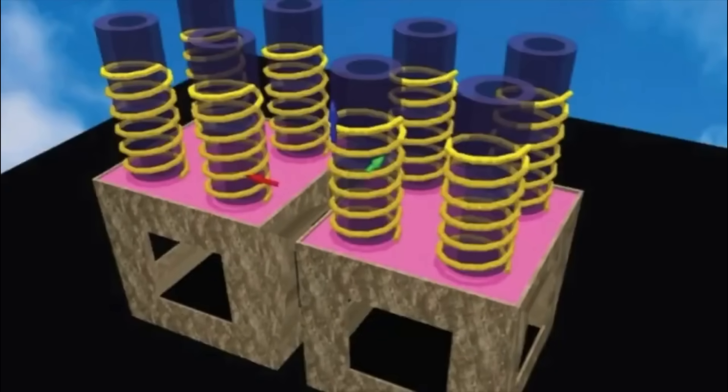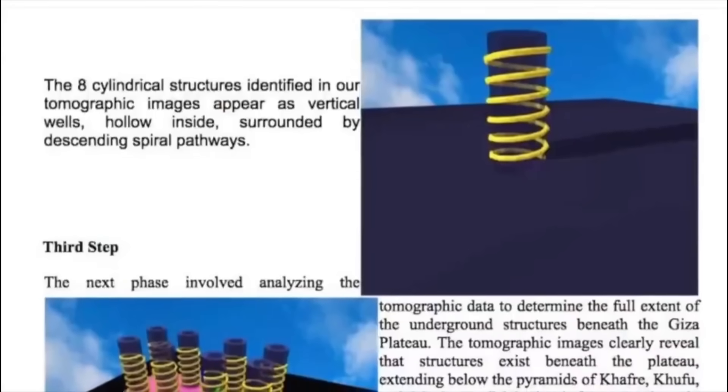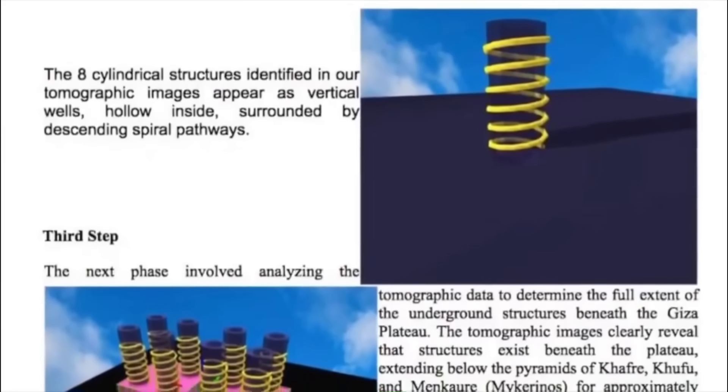Even more intriguing, at the base of these structures are two massive cubic formations measuring approximately 80 meters in diameter. The tomographic data suggests that these are vertical wells with intricate spiral pathways.